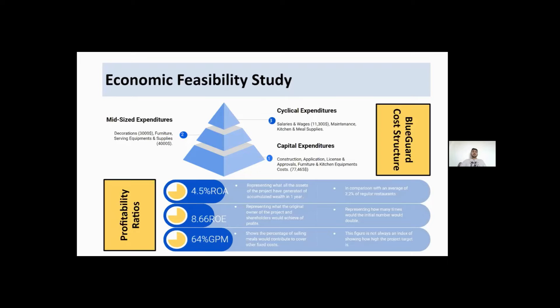The second category is the mid-sized expenditures, that are provisions stated to be expended when needed. For example, decorations at the budget of 3,000 US dollars and the furniture and serving equipment and other supplies like 4,000 US dollars. And the third category is the cyclical expenditures, which are expenses needed every month in order to keep the business operating, such as the salaries and wages, the maintenance and the kitchen and meal supplies.